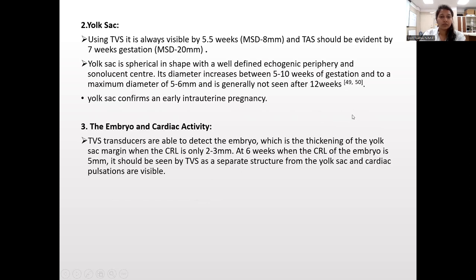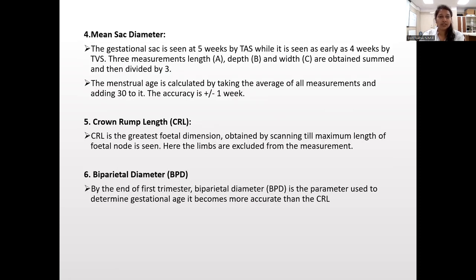Embryo and cardiac activity: TVS is able to detect the embryo, which is a budding at the yolk sac margin, when the CRL is 2 to 3 mm. At six weeks when the CRL is 5 mm, it should be seen by TVS as a separate structure from the yolk sac and cardiac pulsations should be visible. For mean SAC diameter, the gestational sac is seen at five weeks by transabdominal while it is seen as early as four weeks by TVS. Three measurements should be taken — length, depth, and width — and divided by three.